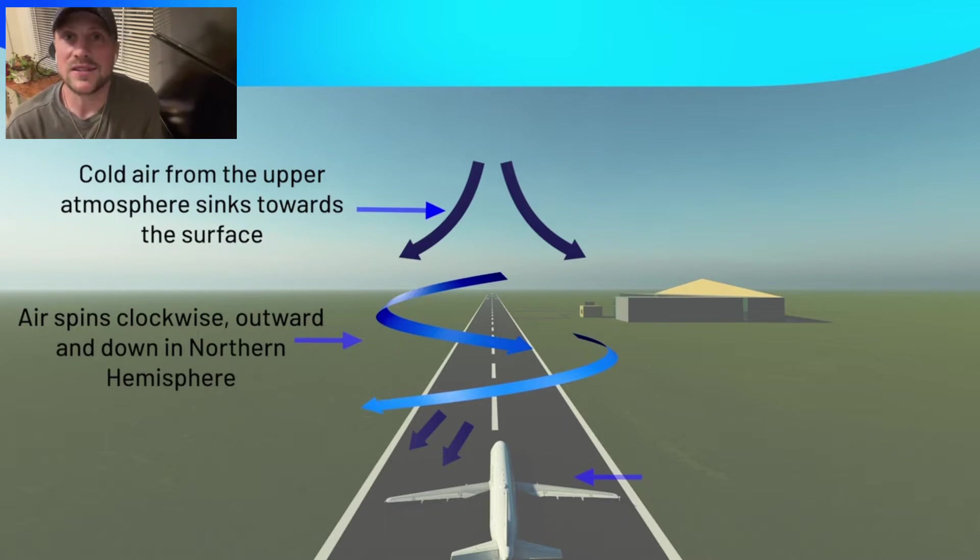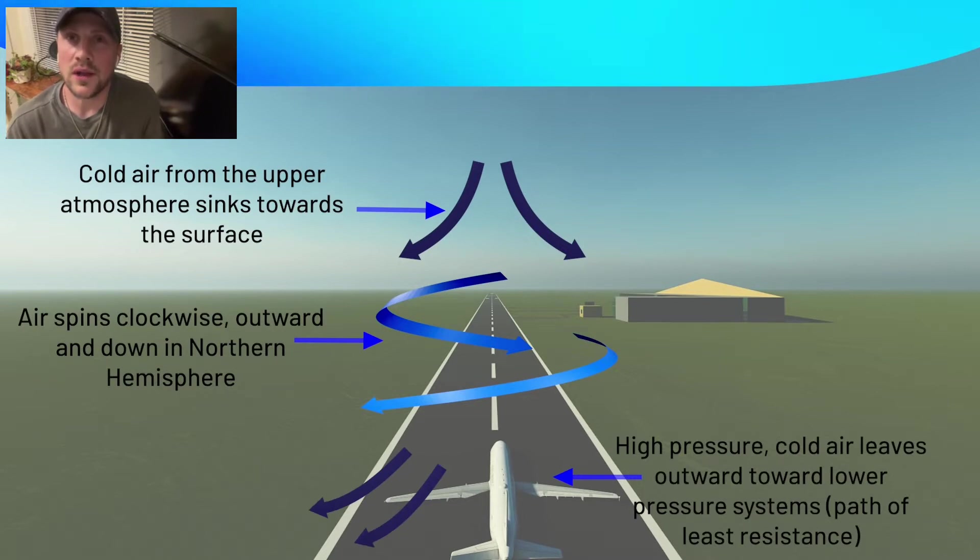Finally, at the surface, the high pressure cold air leaves and disperses outwards towards lower pressure systems around it. To remember this, think of air as always taking the path of least resistance. That means that high pressure air will seek out and travel to areas of low pressure or less resistance.